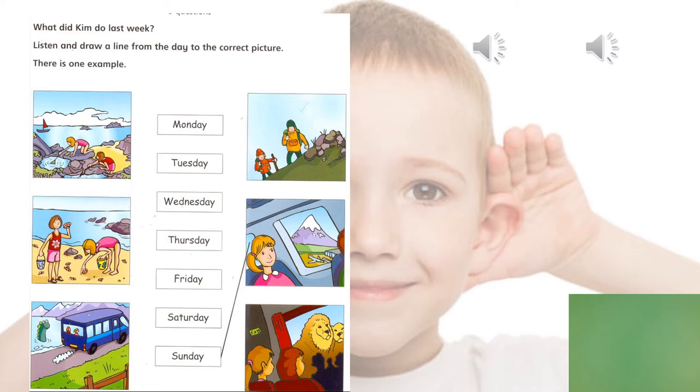Okay everyone, so now let's correct it together. What did the girl do or did on Tuesday? What did Kim do on Tuesday? That's correct, she went to the beach to find some shells.